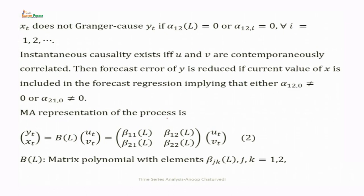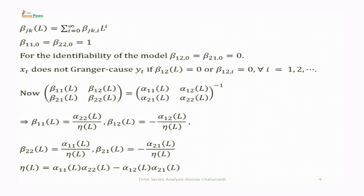Now we consider the MA representation: [y_t, x_t] = V(L)[u_t, v_t], written as [β₁₁(L), β₁₂(L); β₂₁(L), β₂₂(L)][u_t, v_t]. V(L) is the matrix polynomial with elements β_jk(L) = Σᵢ₌₀^∞ β_jk(i) L^i, and we take β₁₁(0) = β₂₂(0) = 1.